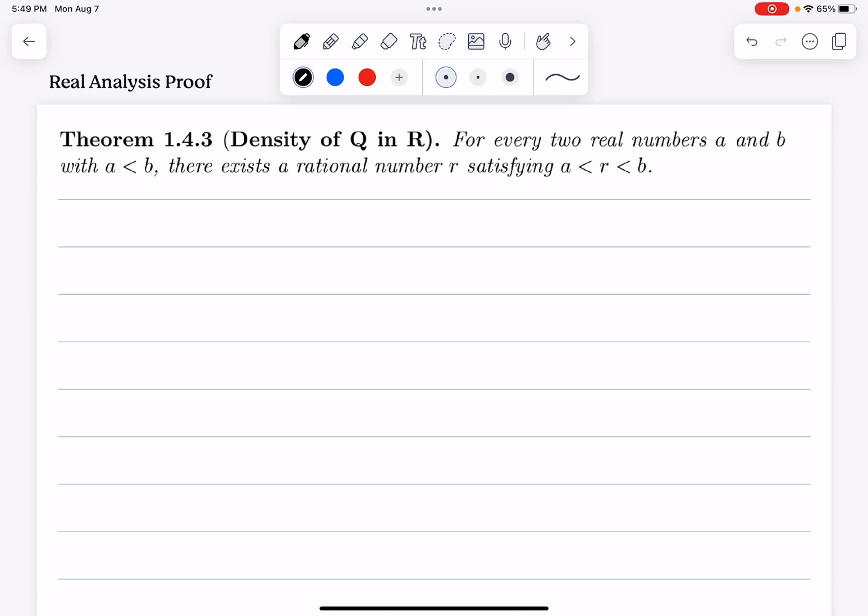All right, today we're going to be looking at one of the very important properties of the real number line, which is density of Q in R. And this theorem basically states that given any two real numbers, we can always find a rational number that is strictly between the two real numbers.